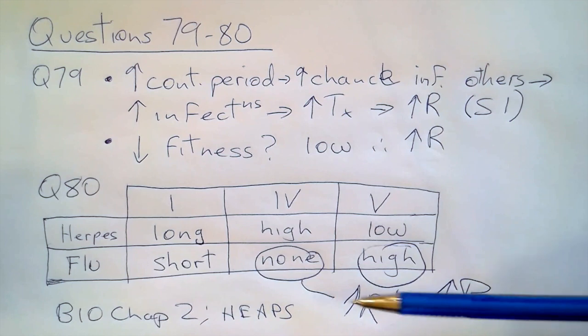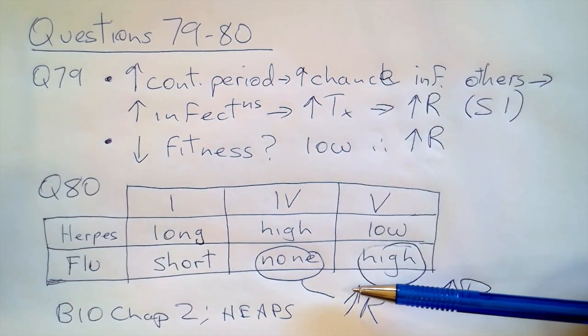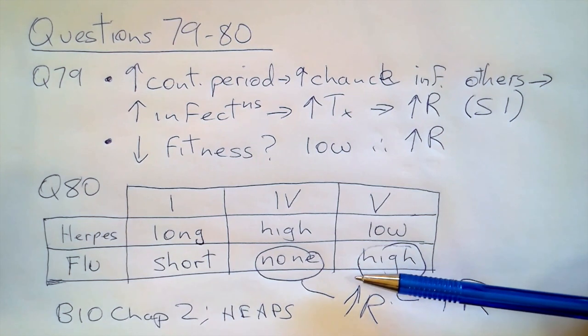Again, we're using information from a previous question to help us answer another question. And so for question 80, the answer is D.